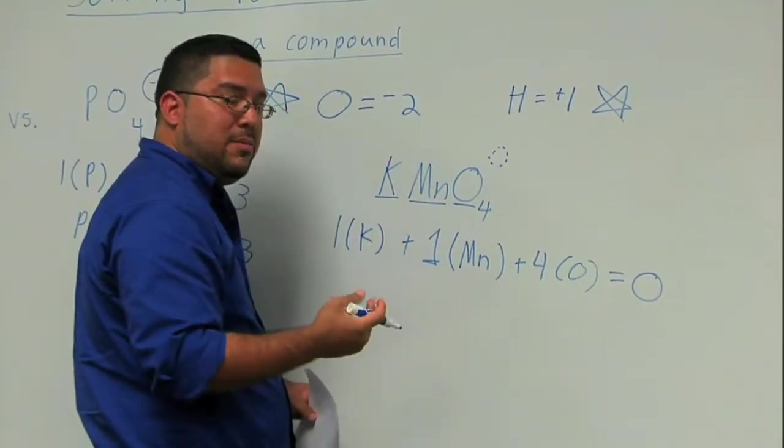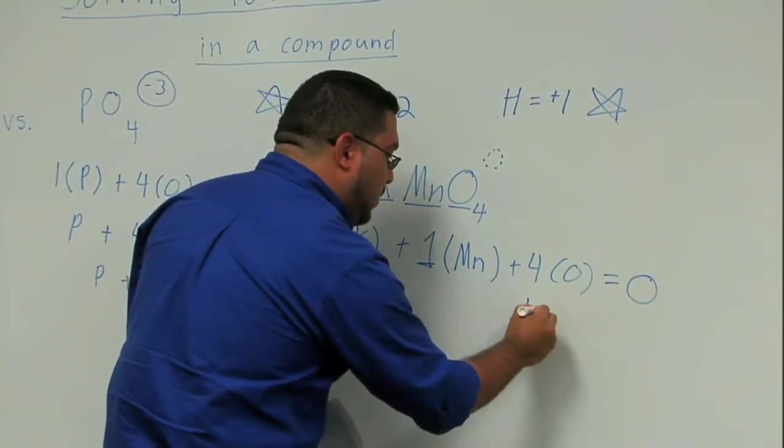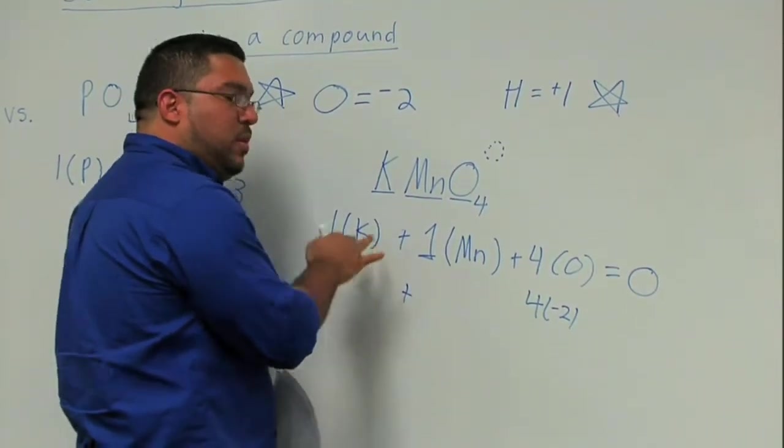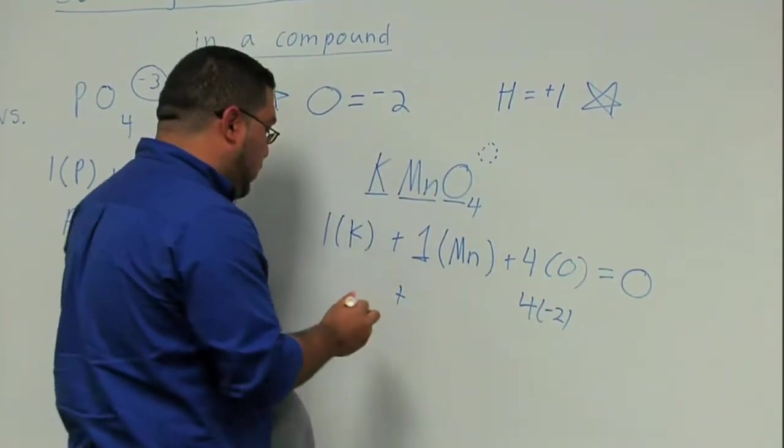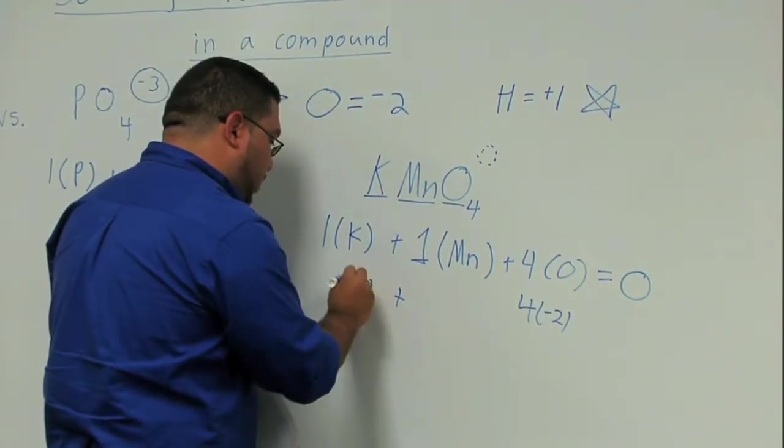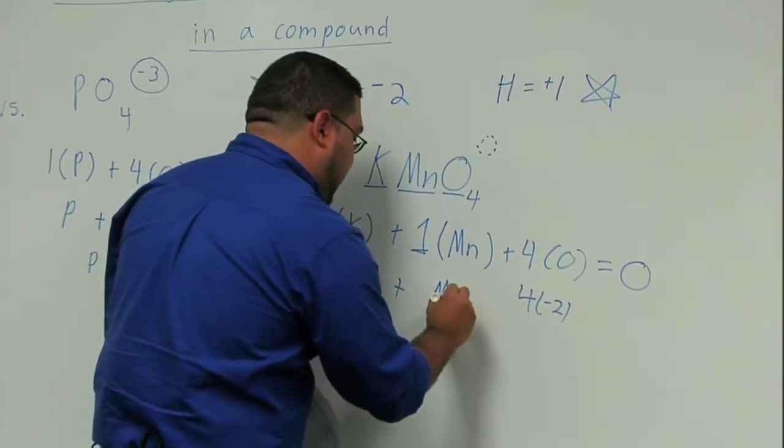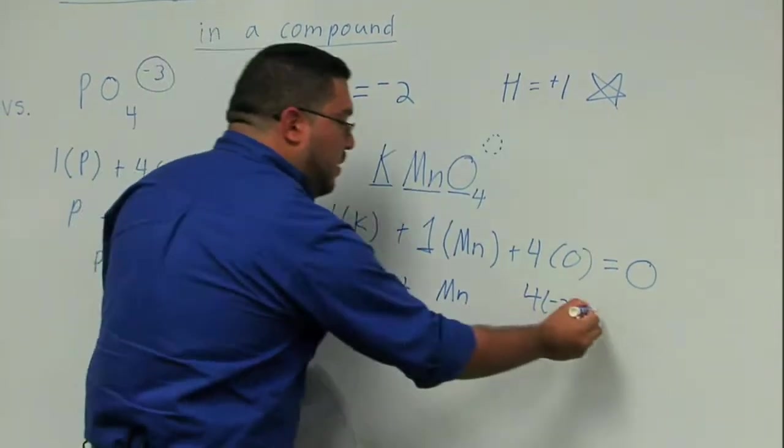Let's go ahead and plug in the charges that we do know. Oxygen like I said most of the time will be equal to negative two. So this is actually four times negative two. Potassium is equal to a positive one. You should be able to get that from the periodic table. This is a positive one charge. It's in group 1A.